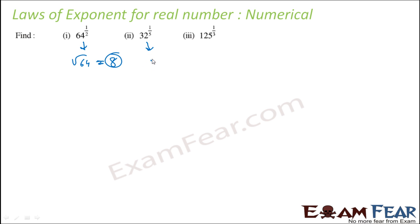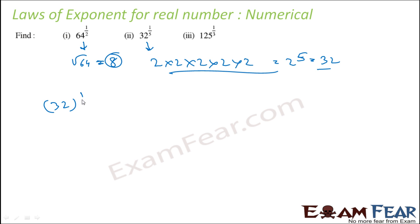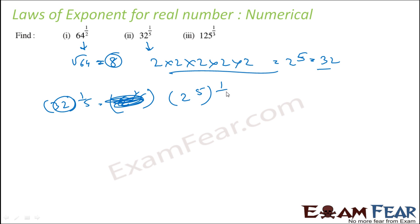Next: 32 to the power 1 by 5. We know 32 equals 2 to the power 5 — since 2, 4, 8, 16, 32 is 2 multiplied 5 times. So 32 to the power 1 by 5 can be written as 2 to the power 5, raised to the power 1 by 5, which is 2 to the power 5 times 1 by 5. The 5's cancel, giving 2 to the power 1, that is 2.